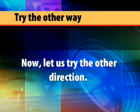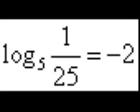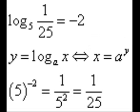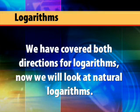Now let us try the other direction. Log base 5 of 1/25 is negative 2 — let us convert that to exponential form. Again using the basic formula we see A is 5, x is 1/25, and y is negative 2. We have now converted both directions for logarithms.